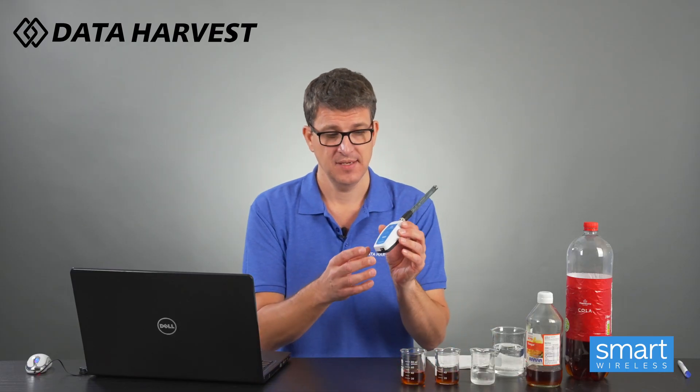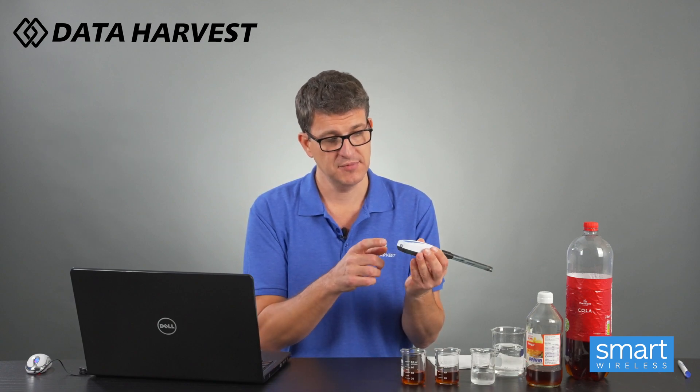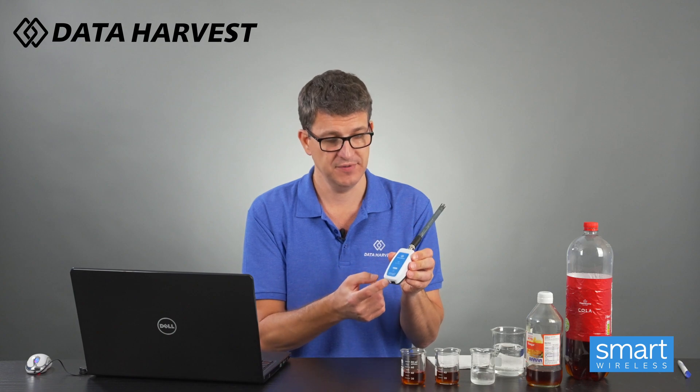So our pH sensor here is USB and Bluetooth like all our new wireless Bluetooth sensors are. To turn it on you just hold the button down the bottom for two seconds, it starts to flash and it's now broadcasting Bluetooth.